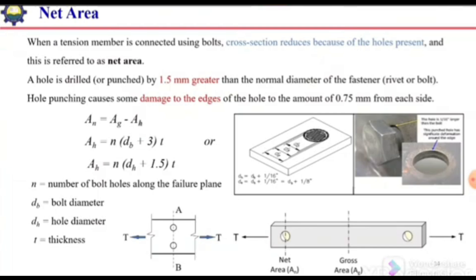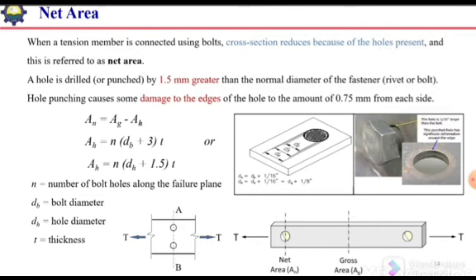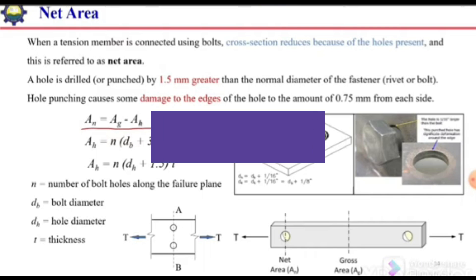When a tension member is connected using bolts, the cross-section reduces because of the holes present. This is referred to as the net area — the area at the section where there are holes. Net area is equal to gross area minus the area of holes.